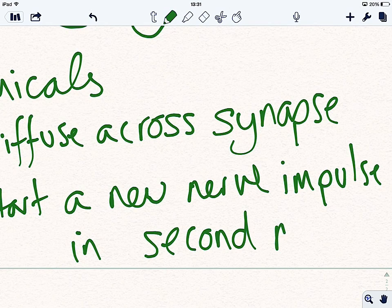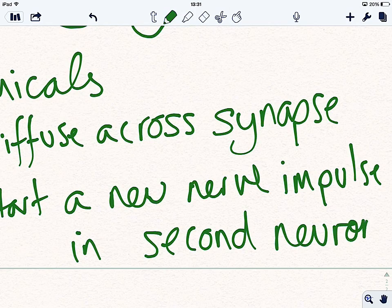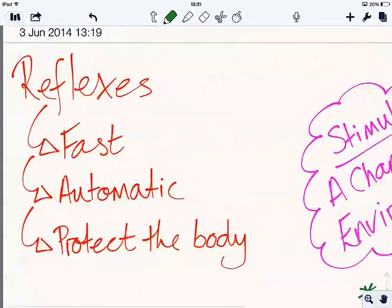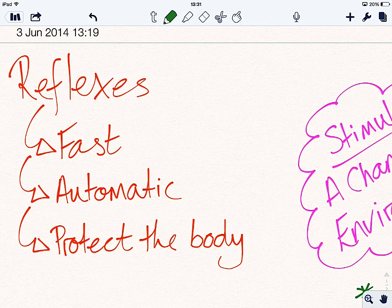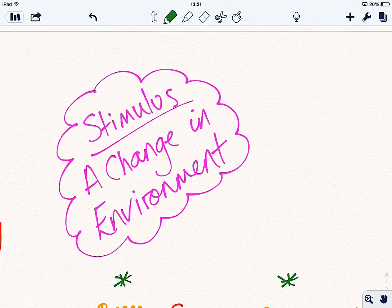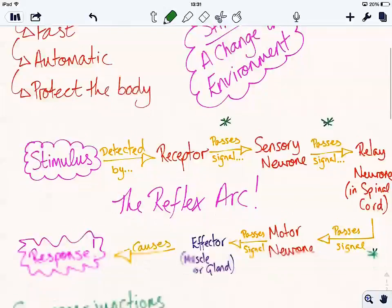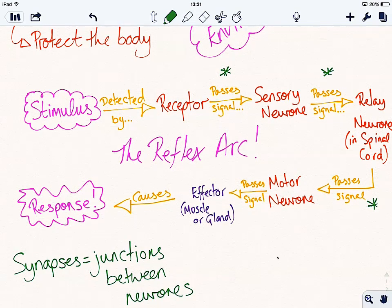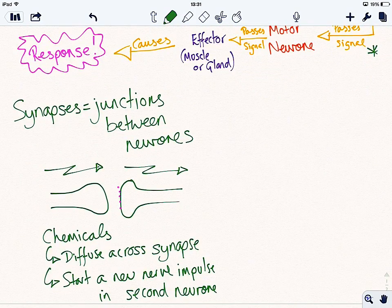And that's it. That is reflexes. Fast, automatic response designed to protect the body. That is the definition of a stimulus, a change in the environment. That is the reflex arc, stimulus, receptor, sensory neuron, relay neuron, motor neuron, effector, response. And synaptic transmission.